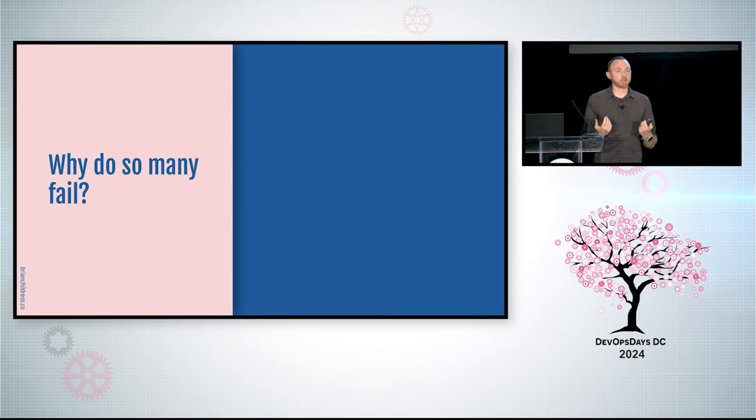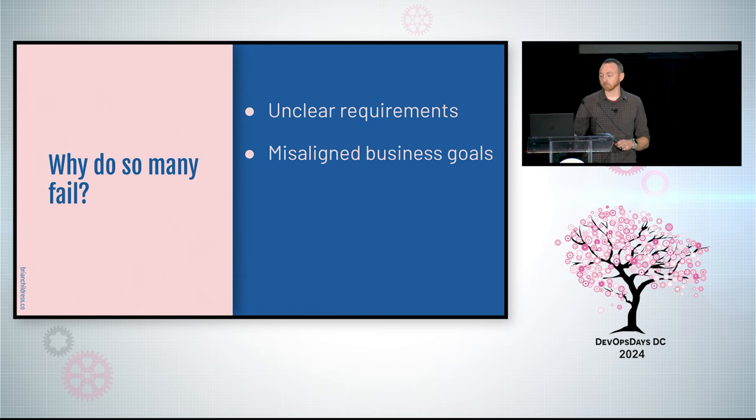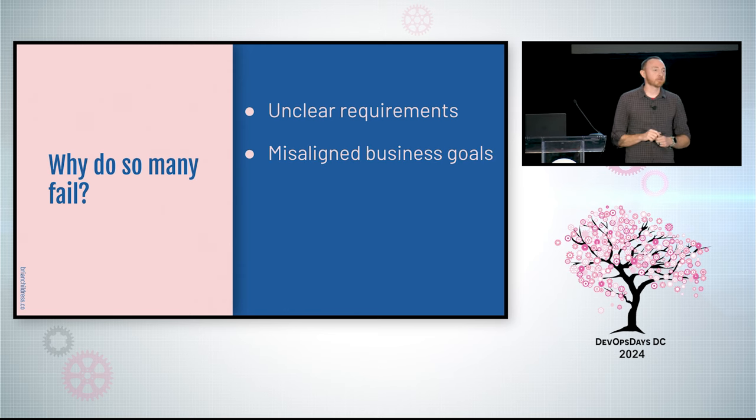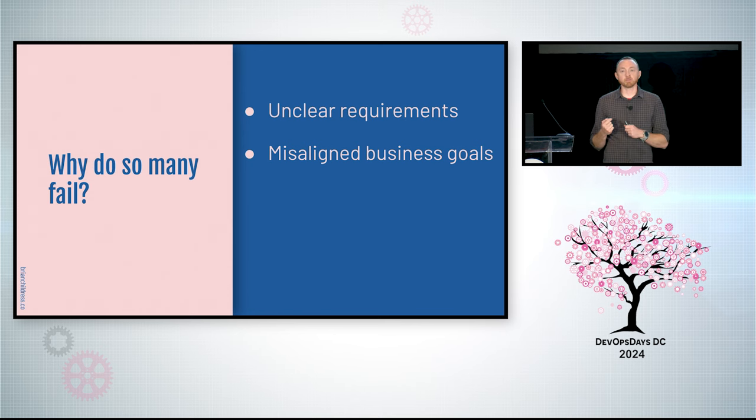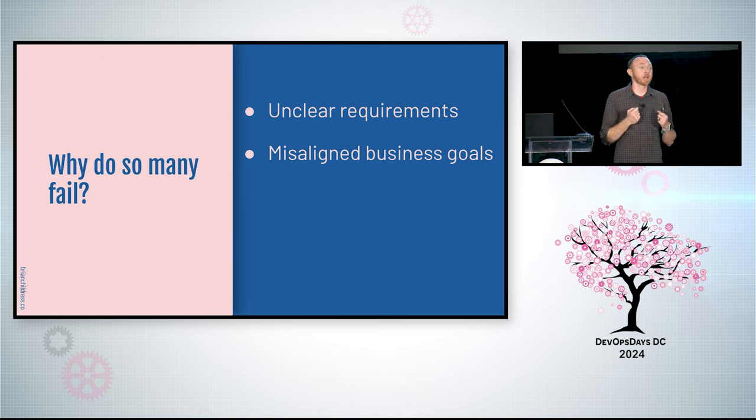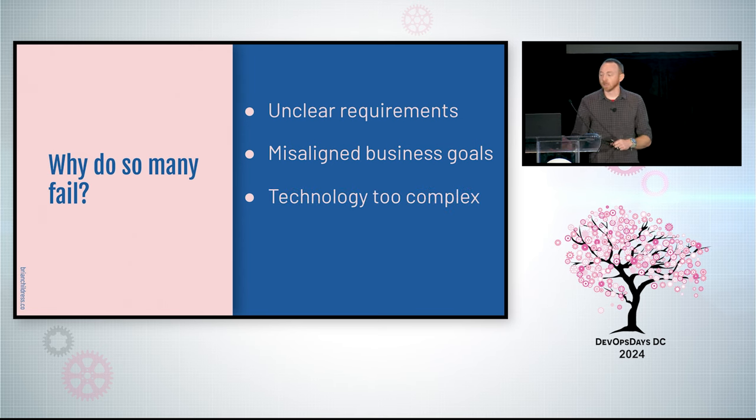So why do so many software projects fail? A lot of times because we have unclear requirements. We don't understand what we're building, why we're building it, or who we're building it for. Very often we have misaligned business goals. We want to really solve things with technology, build things for scale and growth, but they may not be aligned with the actual business goals.